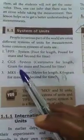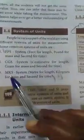CGS means Centimeter for length, Gram for mass, and second for time.